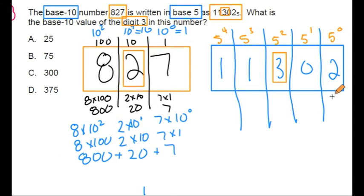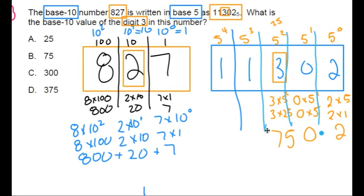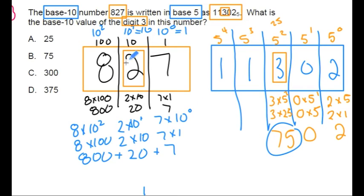This first digit here is going to be 2 times 5 to the 0 power, which is 2 times 1, or 2. The 0-digit is 0 times 5 to the 1st, which is 0 times 5, or 0. Now let's do number 3, which is actually our answer. 5 times 5 is 25. So the 3-digit is equal to 3 times 5 to the 2nd, or 3 times 25. What's 3 times 25? 75. And guess what? The value of the digit 3 in this number in base 5 is equal to B, 75.